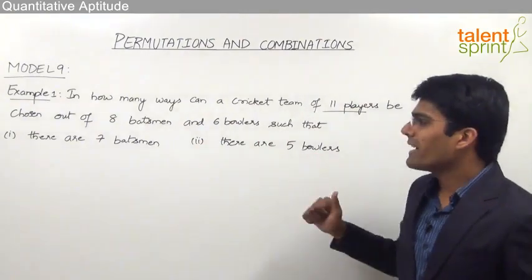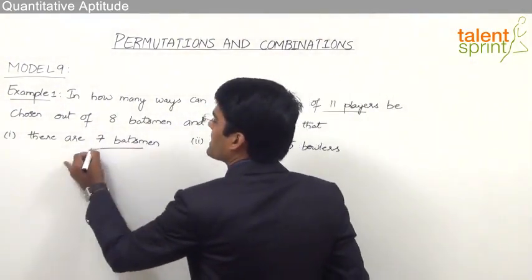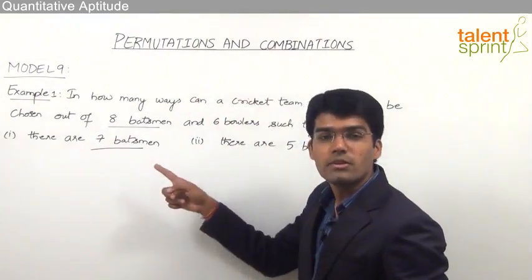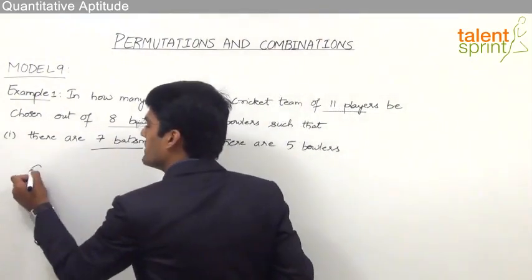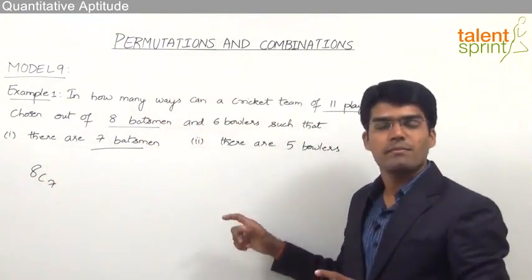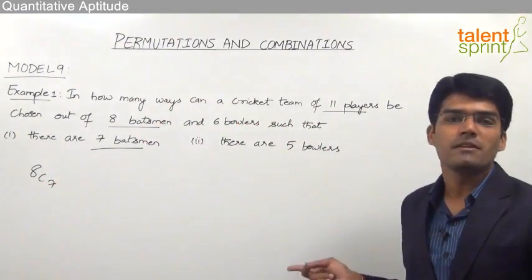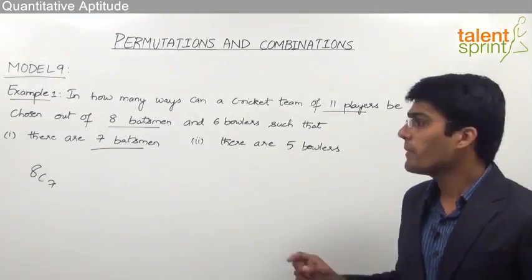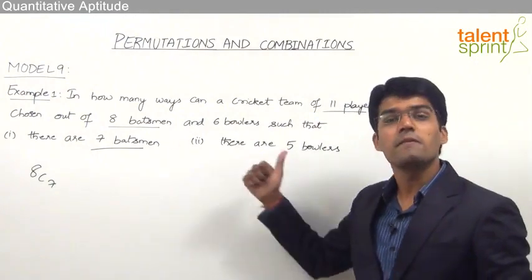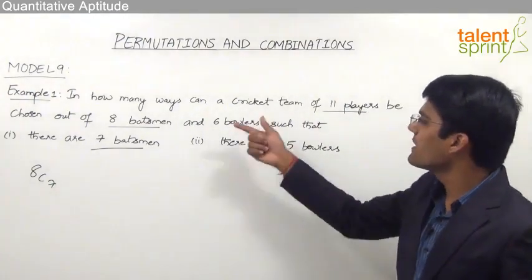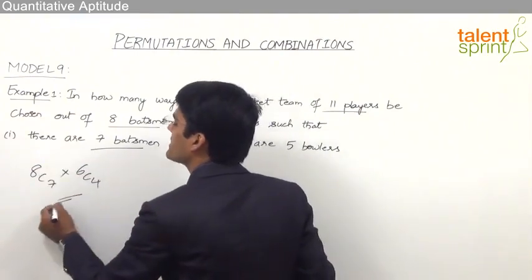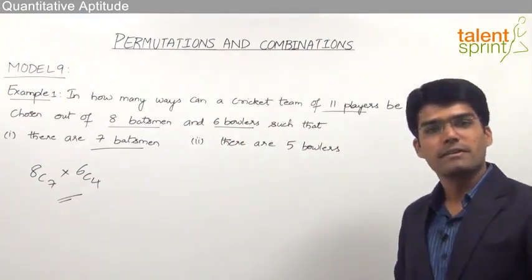Going by the first condition, if we want 7 batsmen, the total choice we have is 8 batsmen. So out of 8 we need to select 7, which can be done in 8C7 ways. After selecting 7 batsmen, the remaining 4 players have to be bowlers — since there are 11 players total and 7 are selected, remaining 4 have to be bowlers. Out of 6 bowlers we select 4, so the answer for the first bit is 8C7 × 6C4.